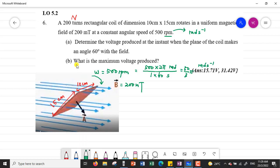Question A: determine the voltage produced at the instant when the plane of the coil makes an angle 60 degrees with the field. When the plane of the coil, plane of the coil means the area of the coil, makes an angle 60 degrees with the field, we find out that we want to find the voltage produced, means that the EMF induced.